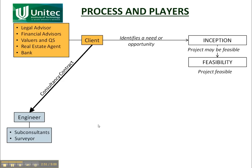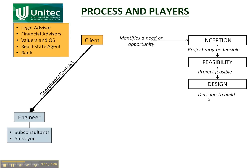If they decide that the project is feasible and the client decides to proceed, then we go on to the design, which is usually done by the engineer — remember, engineer is the same thing as consultant. From that we've got a design and an engineer's estimate for how much it's going to cost. Then the client makes a decision: do I want to build it, do I want to carry on with the project? If he doesn't, then the project's over, or we might repeat the design.